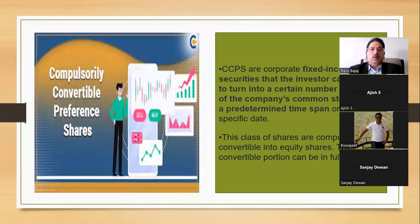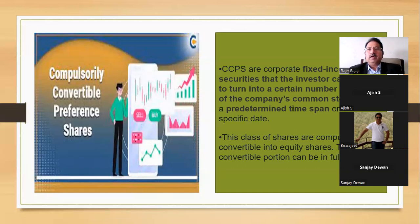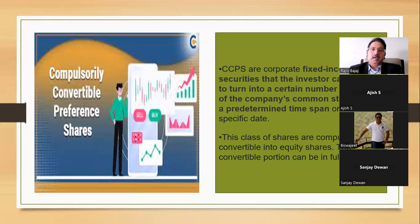What is a Compulsory Convertible Preference Share? It basically gives a fixed income to investors and is converted at a later date. The conversion can be based on a time span — for example, after two years — or it can be linked to a predetermined event, such as when the company raises Series A, where 50 or 80 percent conversion happens, or at the Series B stage.